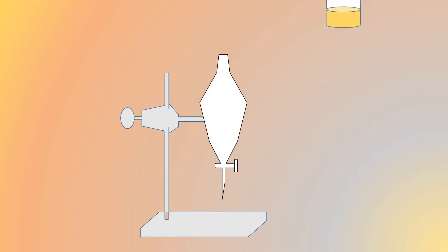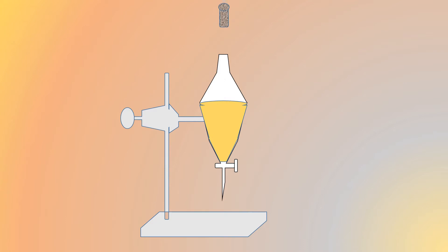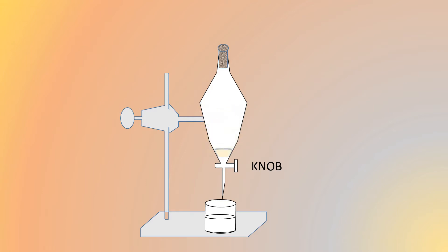Take a separating funnel and add a mixture of oil and water. After adding, close it with a rubber stopper and allow the separating funnel to settle. The oil and water will form distinct layers. Then open the knob to allow the water, which has settled below, to flow out. Only the oil will remain in the separating funnel — this is how you separate them.